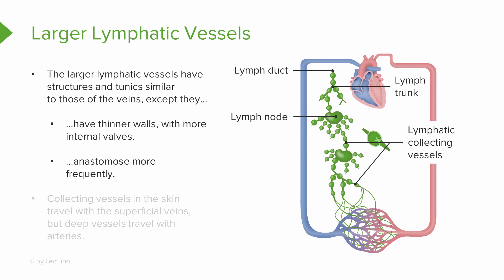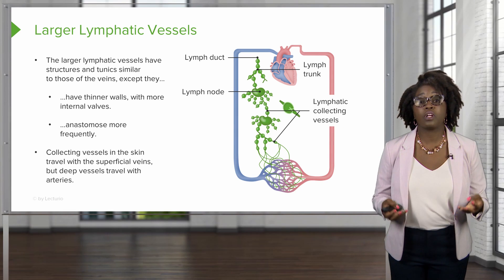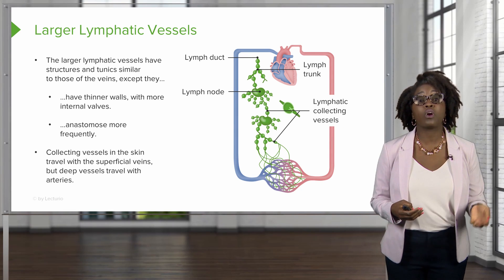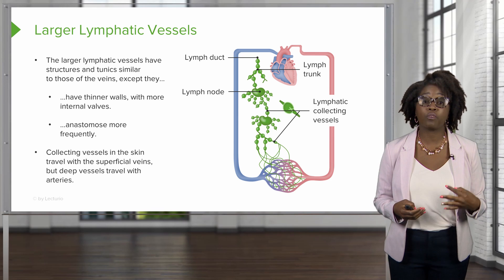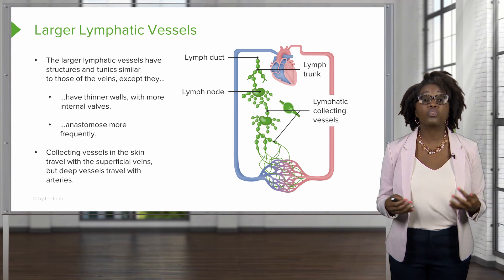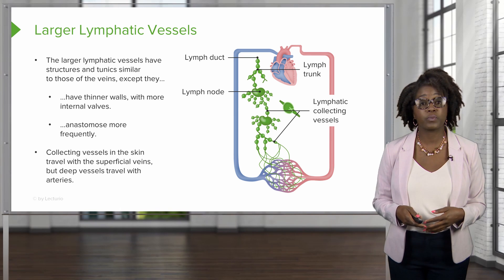Also, these are going to anastomose more frequently. The collecting vessels in our skin are going to travel to our superficial veins, while the deeper vessels will usually travel to the arteries.